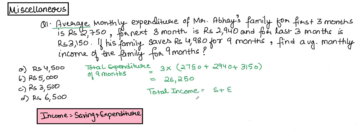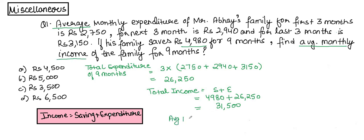Total income = Savings + Expenditure = 4980 + 26,250 = 31,500. This is total income, but they are asking for average monthly income. So average monthly income = 31,500 ÷ 9 = 3500 rupees. The correct answer is C.